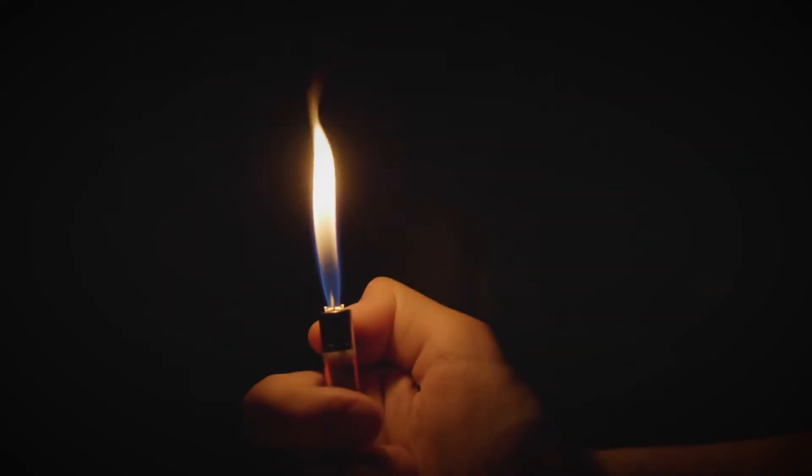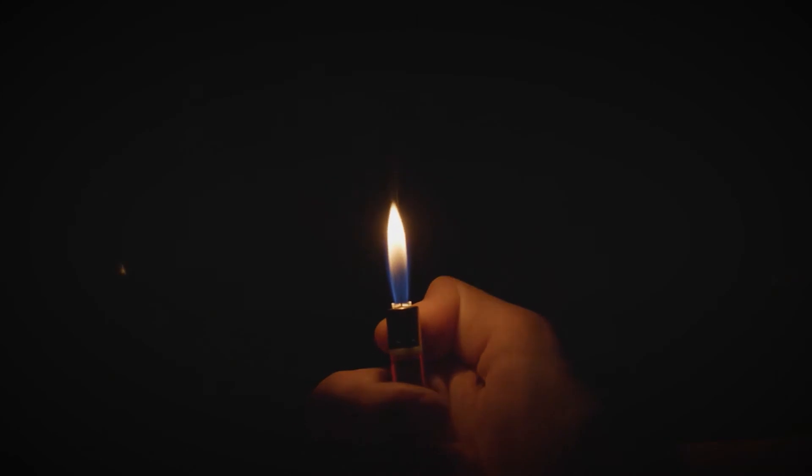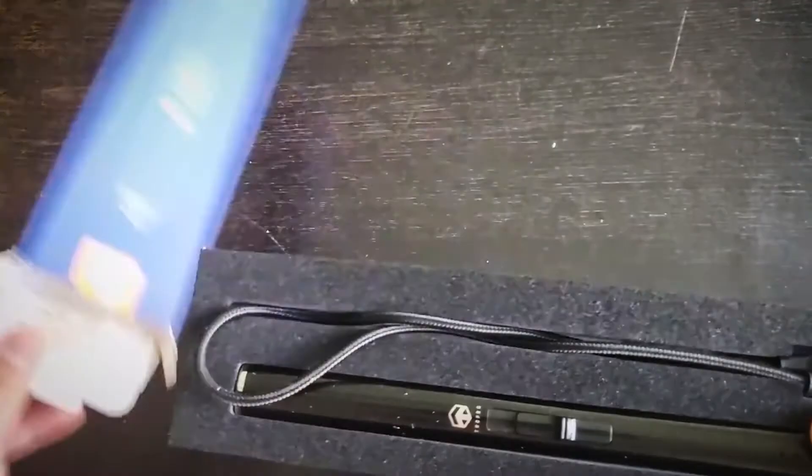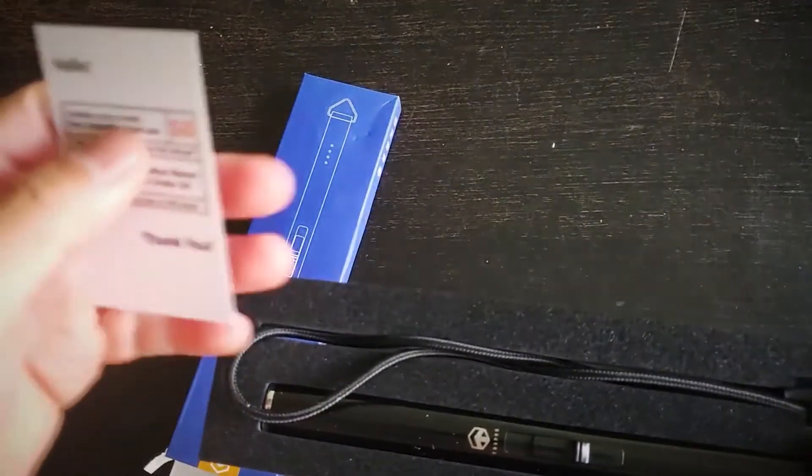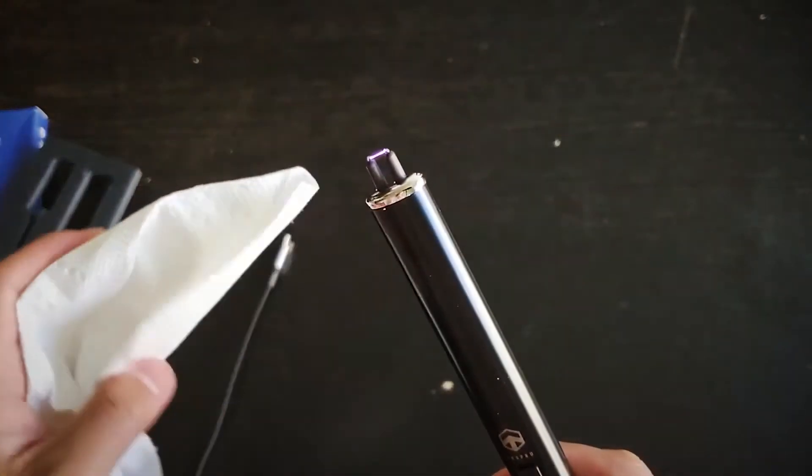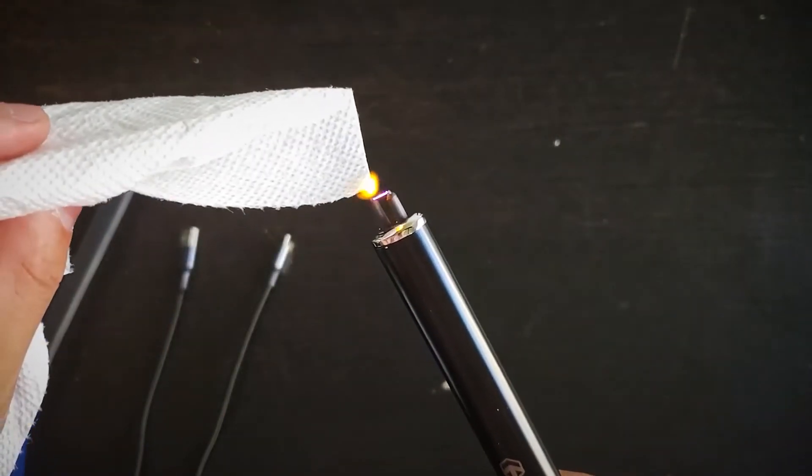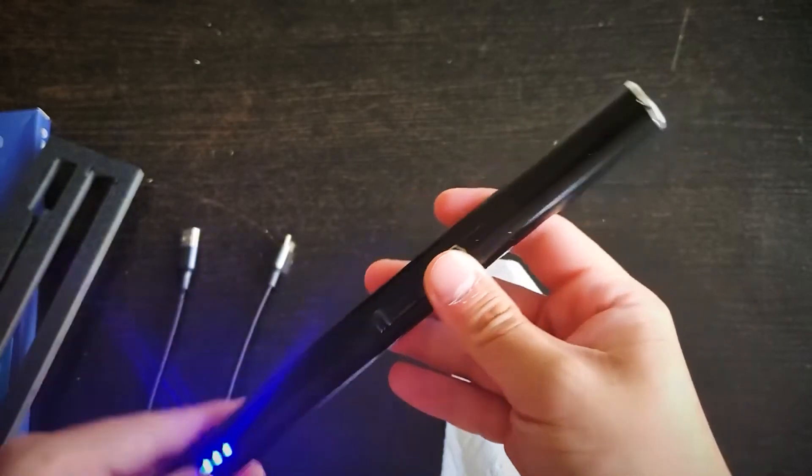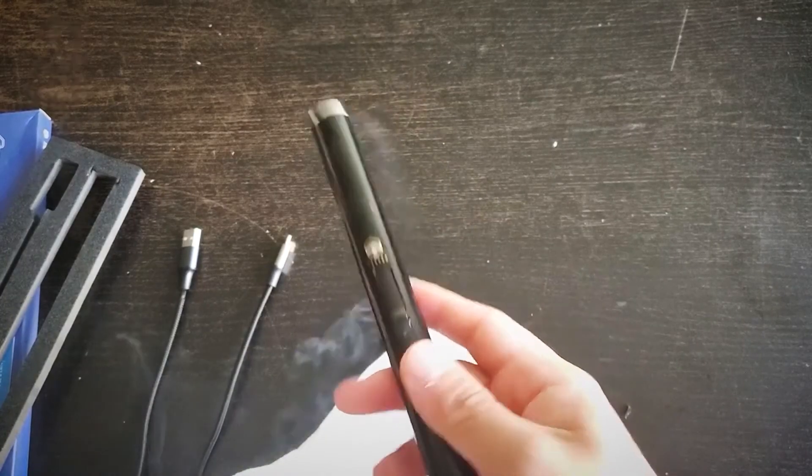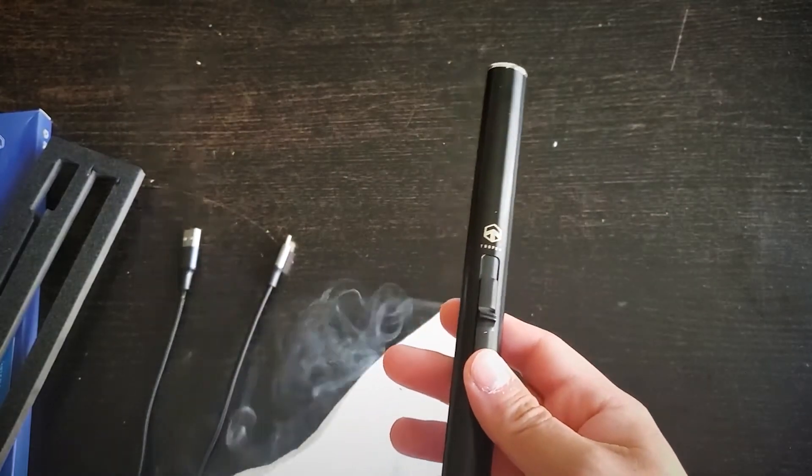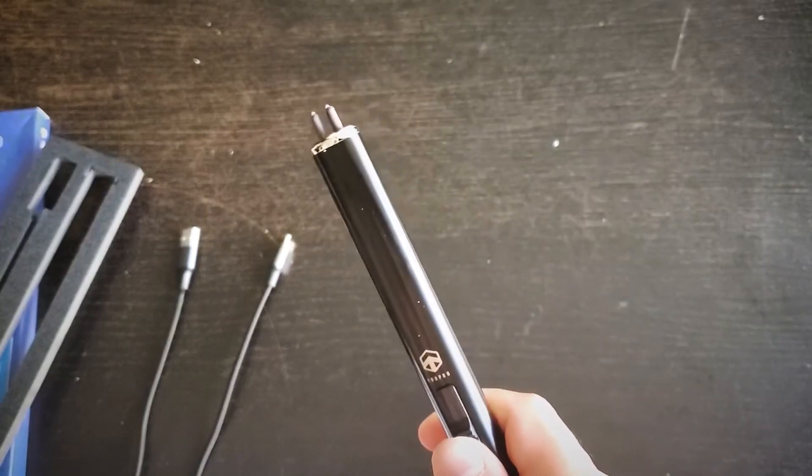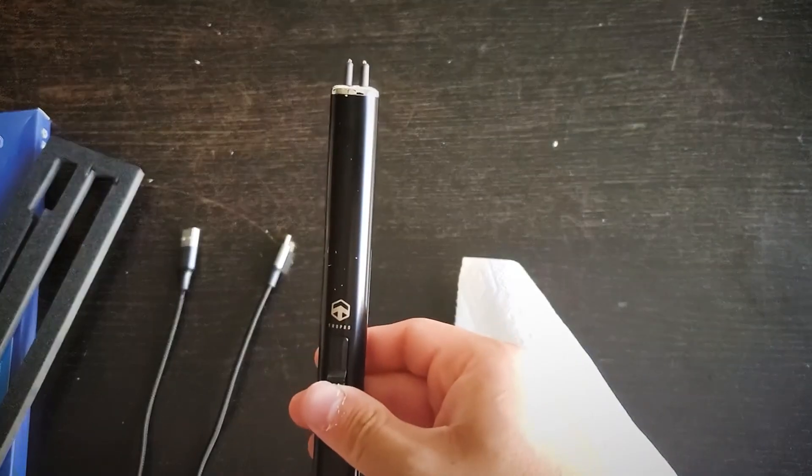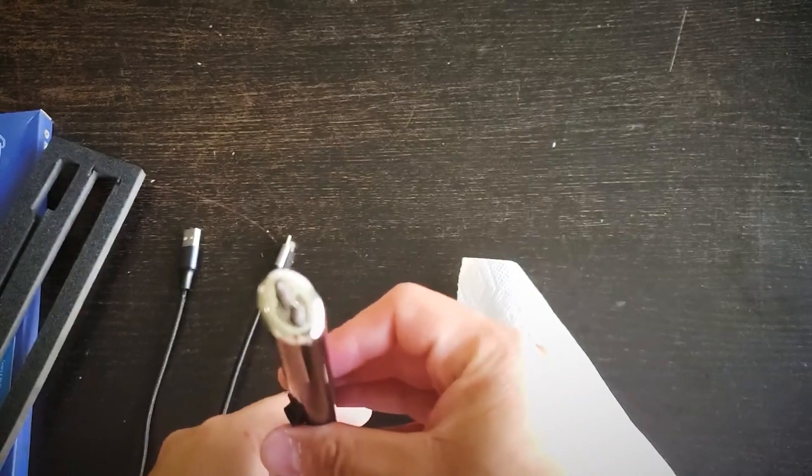Say goodbye to your old lighter and hello to this rechargeable lighter. This pocket-sized portable device is small enough to take anywhere with you. This lighter candle can be used more than 500 times and it's easy to charge. You can use it by simply pressing the safety lock button then pressing the ignition switch. The igniting spark would automatically stop after seven seconds for consumer protection. You can restart the switch to reignite the flame.